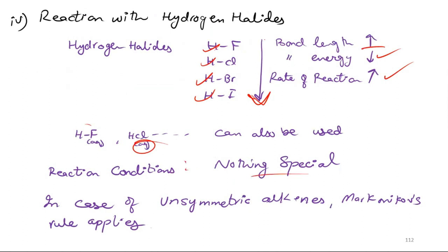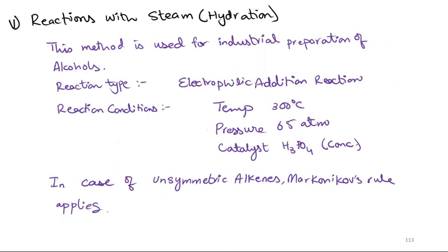In the case of unsymmetric alkenes, Markovnikov's rule applies. We will see this rule. After that, we will talk about the reaction with steam, which is hydration. This method is used for industrial preparation of alcohols. The reaction type is electrophilic addition. Conditions are 300 degrees Celsius, 65 atm pressure, and concentrated H3PO4 is used as a catalyst. For unsymmetric alkenes, Markovnikov's rule applies.